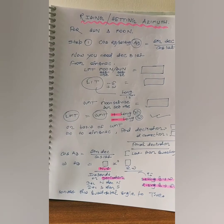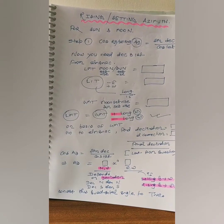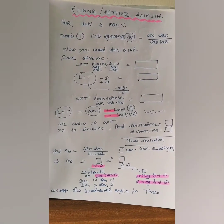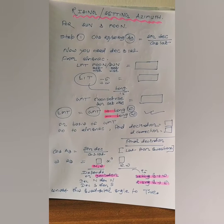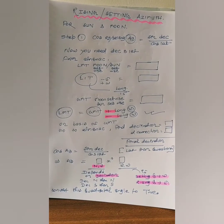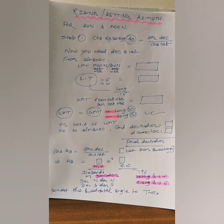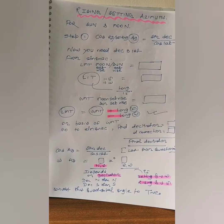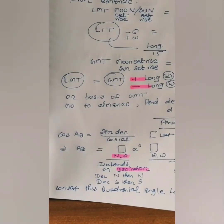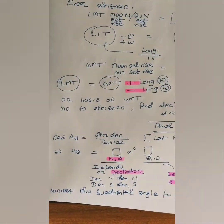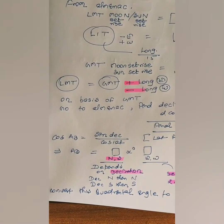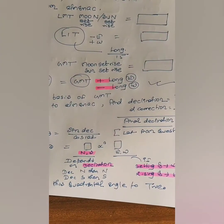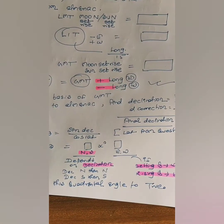Based on that GMT, you will go to the almanac on the given date and time to find the declination. You will also find the d-correction and calculate the final declination. Once you have the declination, put all the values into the formula: cos(rising/setting azimuth) = sine(dec) upon cos(lat), and solve it.